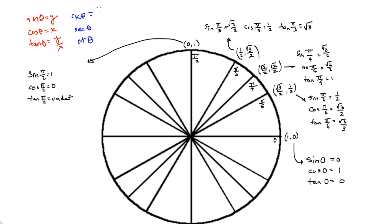Cosecant is the reciprocal of y, secant is the reciprocal of x, and cotangent is the reciprocal of tangent, which is x over y. You really don't have to memorize much about cosecant, secant, and cotangent — you don't have to memorize any extra coordinates. As long as you can find sine, cosine, and tangent, all you need to do is take the reciprocal of those.